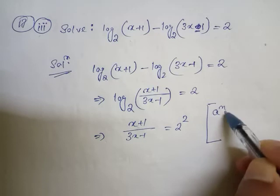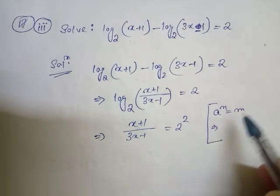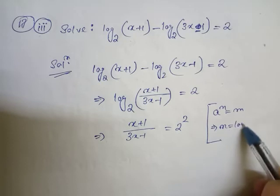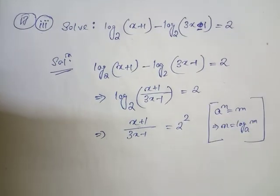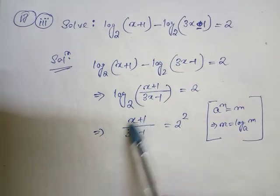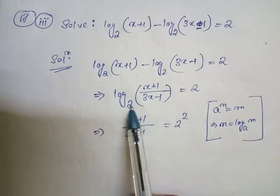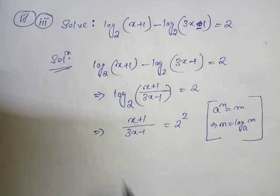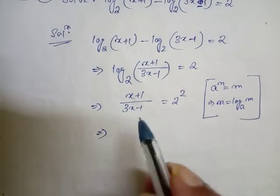Using that formula, a to the power n equals m means n equals log base a of m. After normal calculation, we have (x+1)/(3x-1) equals 4, since 2 squared is 4.